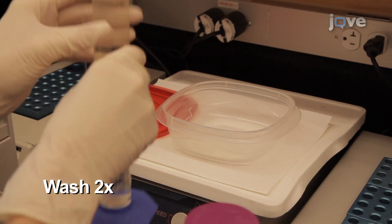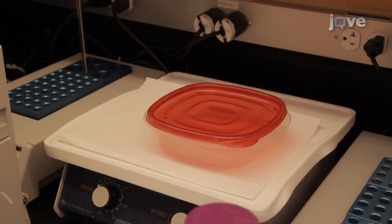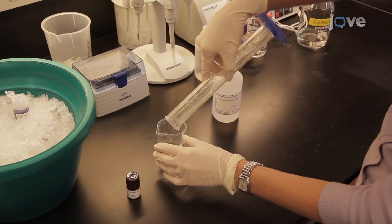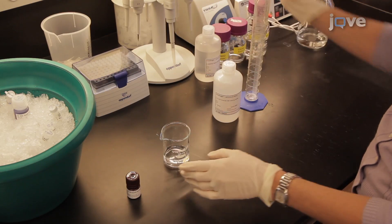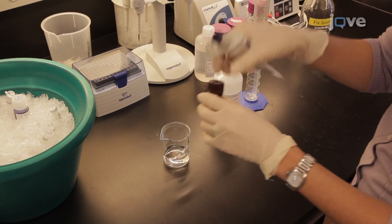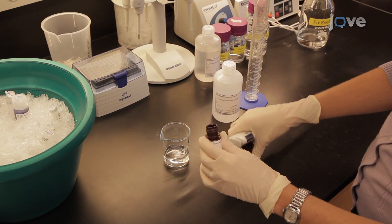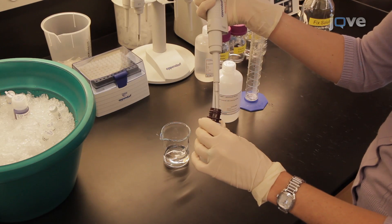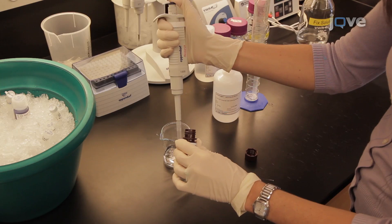Follow the incubation with two additional washes. While the gel is washing, prepare fresh Pro-Q emerald 300 stain by adding 500 microliters of the Pro-Q emerald 300 reagent solution to 25 milliliters of staining buffer provided in the kit.